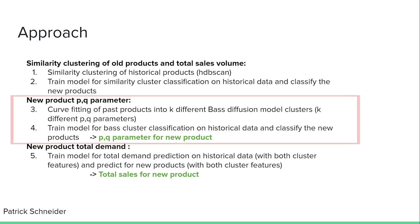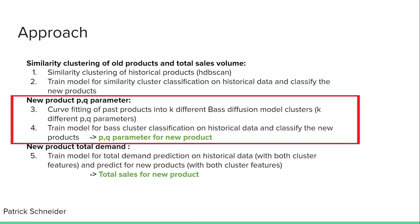To find the p and q parameters of the new product, the following was done. Initially, it was defined how many different base diffusion shapes we allow — this will be called the base cluster. Then we fitted the old product sales to a curve and clustered them into similar base clusters. This gave a cluster assignment to each old product. A classification model was trained on the old products for the base cluster and applied to the new products, giving us the p and q parameters for the new product.